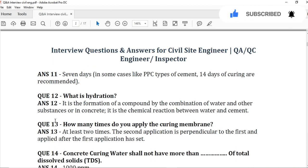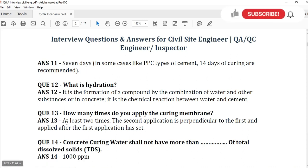Question number 13: How many times do you apply the curing membrane? Answer: At least two times. The second application is perpendicular to the first and applied after the first application has set. Minimum, or at least two times, you have to apply the curing membrane. And the first will be perpendicular to the second. And after the setting of the first application, you have to apply the second curing membrane.